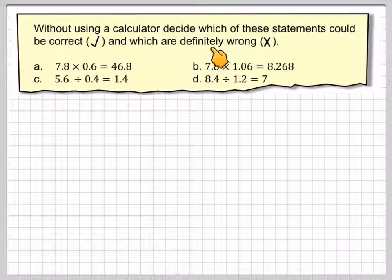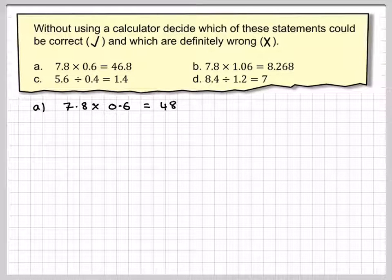Without using a calculator, decide which of these statements could be correct or which are definitely wrong. So 7.8 times 0.6 is equal to 46.8. Let's write that down to begin with.